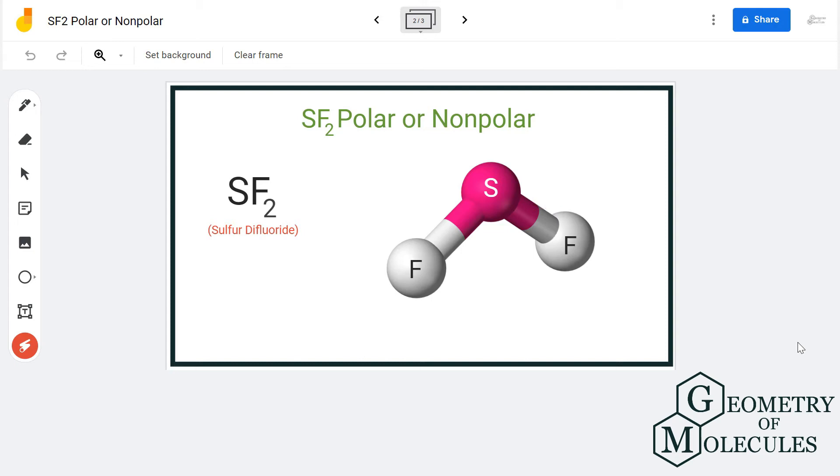As the shape is not linear, there will be a dipole moment between fluorine and sulfur atom, because fluorine is more electronegative than the sulfur atom. Because the shape is not linear, these dipole moments will not be cancelled out, and hence there will be a formation of poles in this molecule, making SF2 a polar molecule.